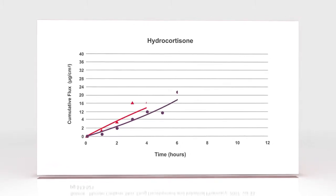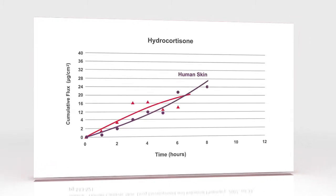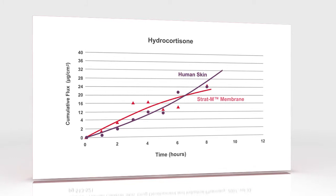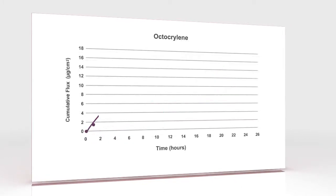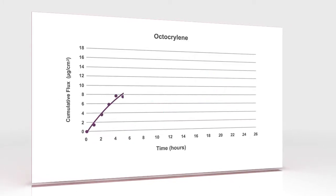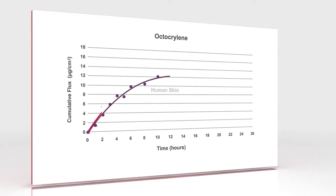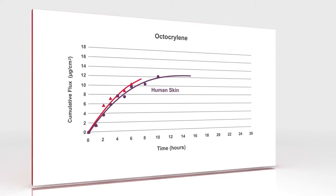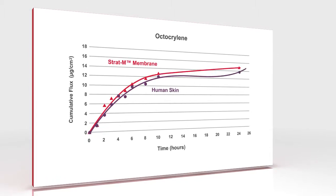Stratum membrane is ideal for the formulation optimization phase of your research. Using the membrane to model faster diffusion with formulation enhancers yields results that match those obtained using human skin.